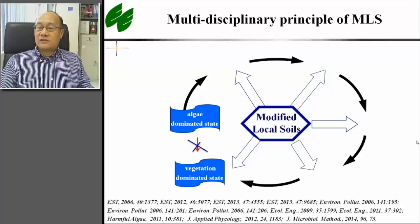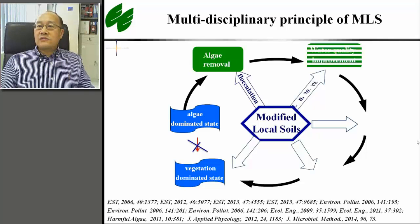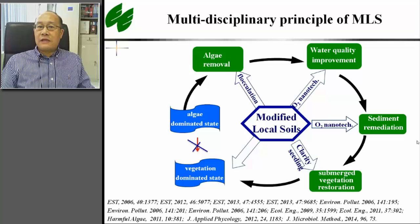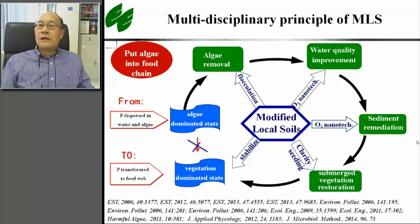Since we want to realize different functions using local soils as a carrier, we have to modify the soil particles using different principles. The goal is to switch the lake from algae-dominated states to submerged vegetation-dominated states. The principles used include flocculation to remove toxic algal blooms, oxygen nanobubbles loaded onto the surface of soils to degrade pollutants for water quality improvement, oxygen nanobubble-modified capping materials to remediate anoxic sediments for internal load control, and encapsulated seeding technology for the germination of submerged macrophyte seeds in stressed sediment environments. The general principle is to put algae and its nutrients into the food chain so that the nutrients may be reused for biodiversity and ecological restoration as a resource.